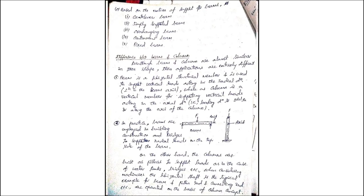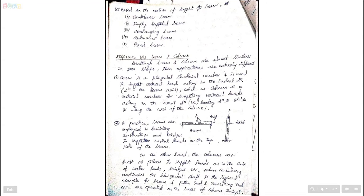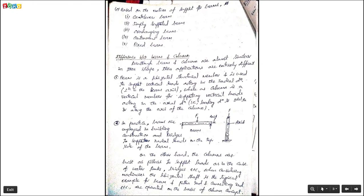Now, what is the difference between a beam and a column? Observing these two figures: a beam is a horizontal structural member used to support vertical loads acting in the radial direction. A column is a vertical member for supporting vertical loads acting in the axial direction — meaning the load acts parallel to, or along, the axis of the column. This is the main difference between the beam and column.